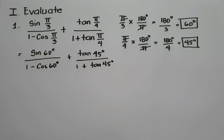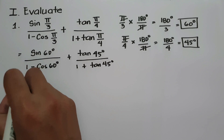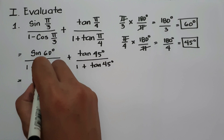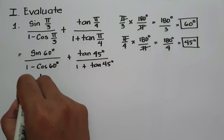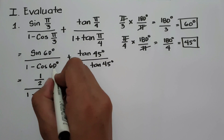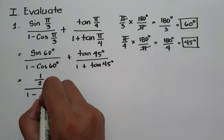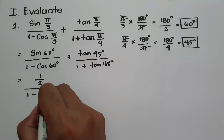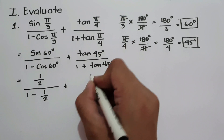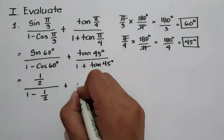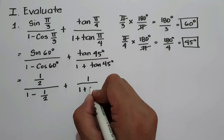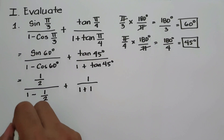So let us simplify. Sine 60 degrees, that's 1/2. Divided by 1 minus cosine 60 degrees, which is also 1/2. Plus tangent 45 degrees, which is 1. Divided by 1 plus tangent 45, which is 1.